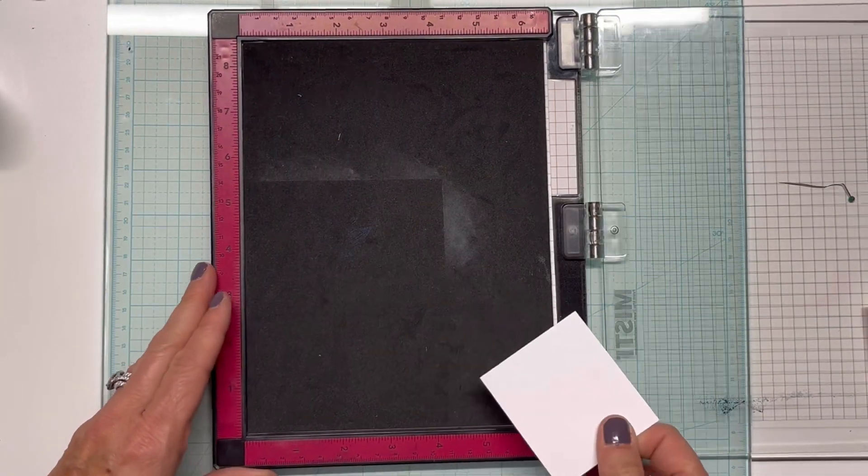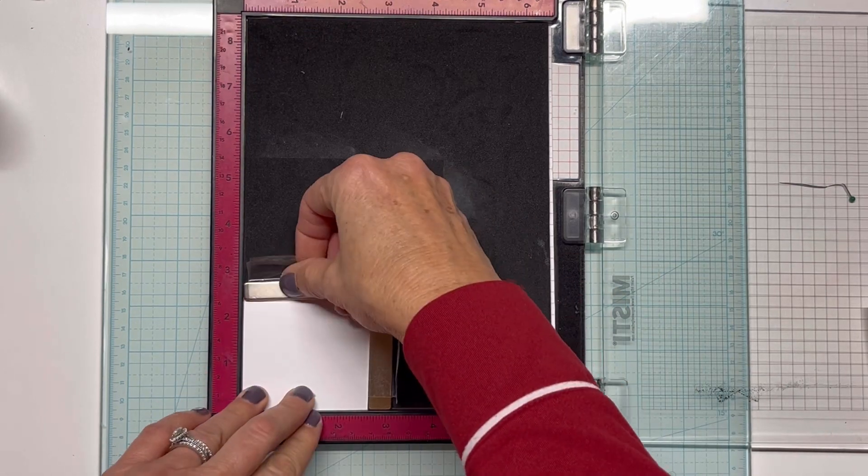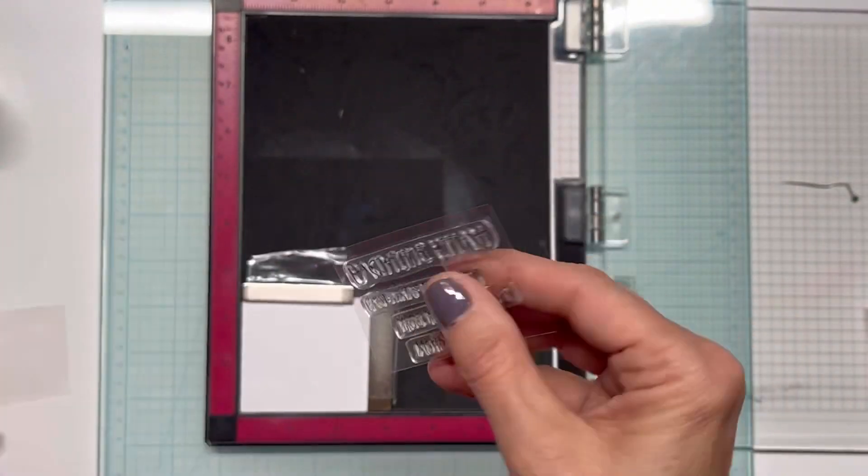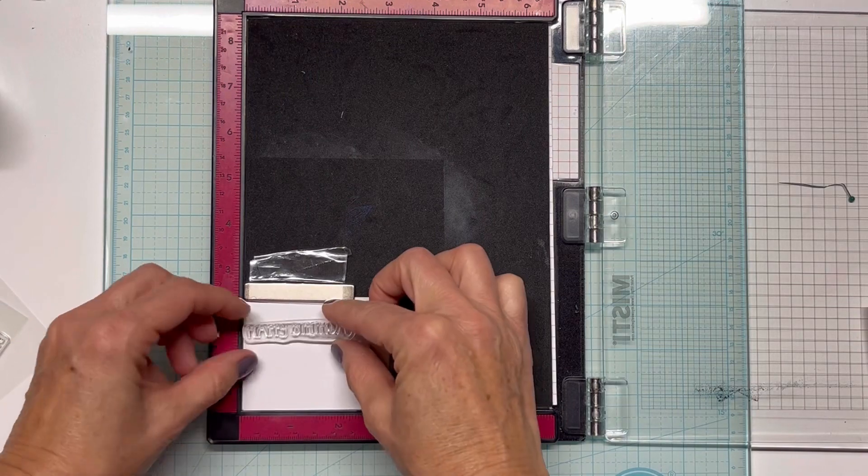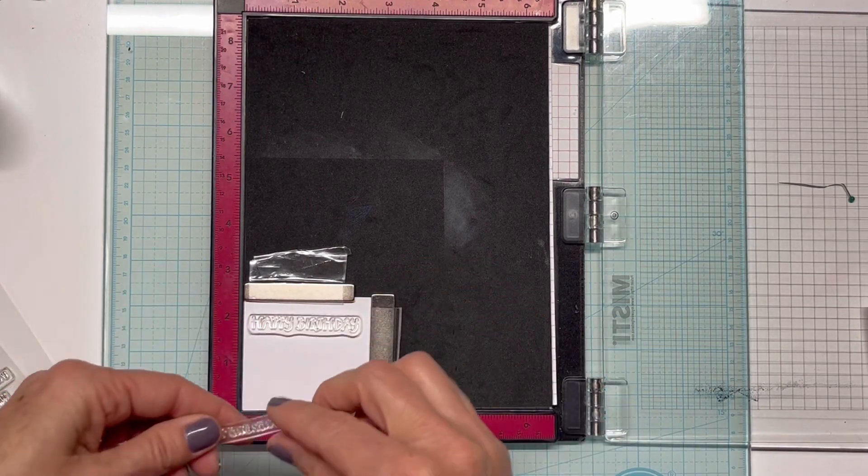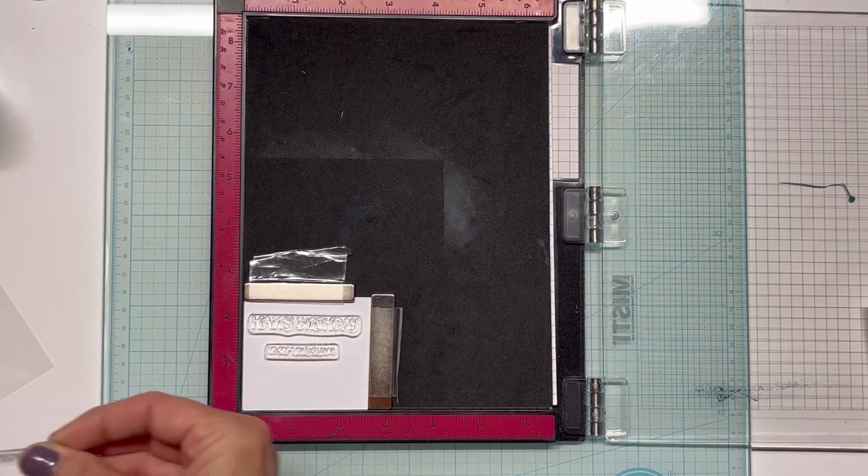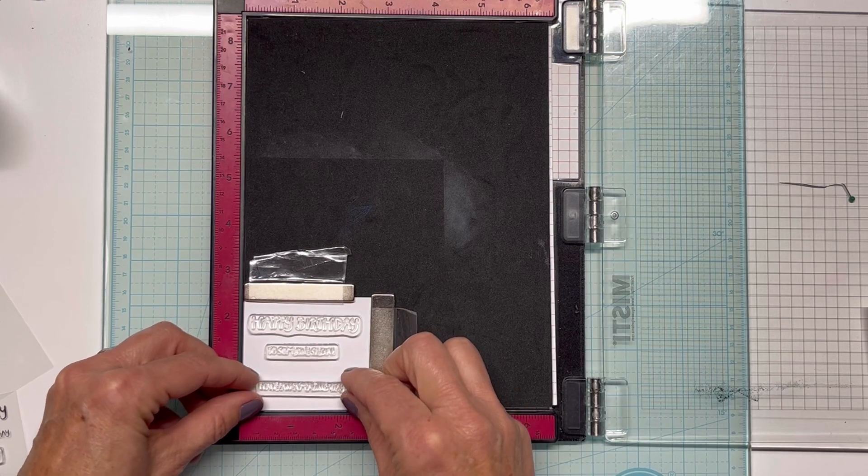So I've got my Misti there and I'm just going to bring in a real small panel. I really don't need very much space for these three little sentiments that I'm going to stamp because they're just so tiny. I'm just going to get them laid down on there to where I feel like I have room to cut or die cut around them.